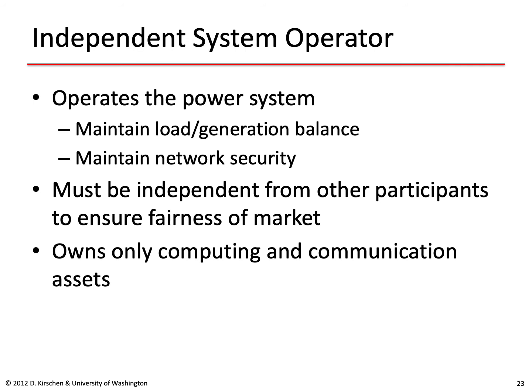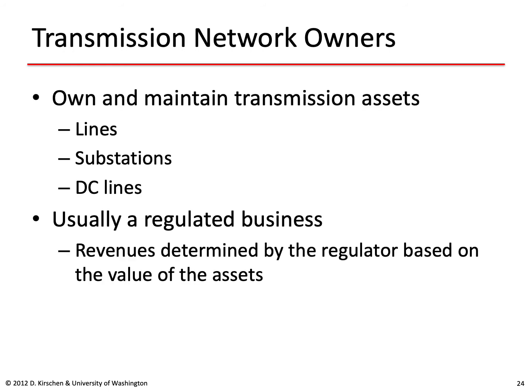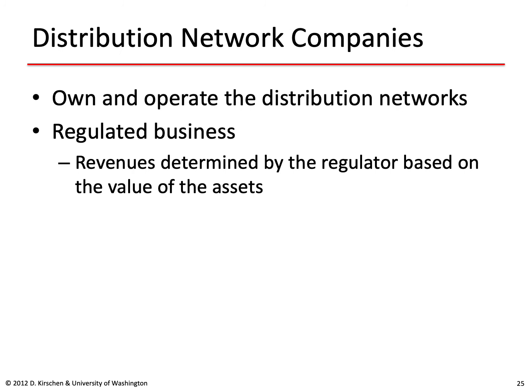The transmission network can be owned by a separate organization — the transmission network owner — whose responsibility is to own, maintain, and build transmission assets such as lines, substations, and DC lines. This business tends to be regulated, and its revenue will be determined by the regulator based on the value of these assets to provide a fair rate of return to investors. Similarly, distribution network companies own and operate the distribution networks; these are also regulated businesses, and their revenues are determined by the regulator based on the value of the assets.